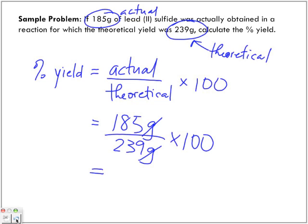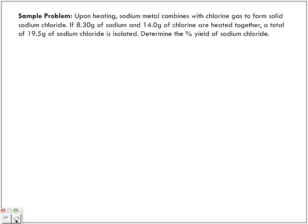Times 100 to give us our percentage. And our percentage, remember we have three significant digits in our question, so our answer must have also three significant digits. 185 divided by 239 will give us 77.4%.